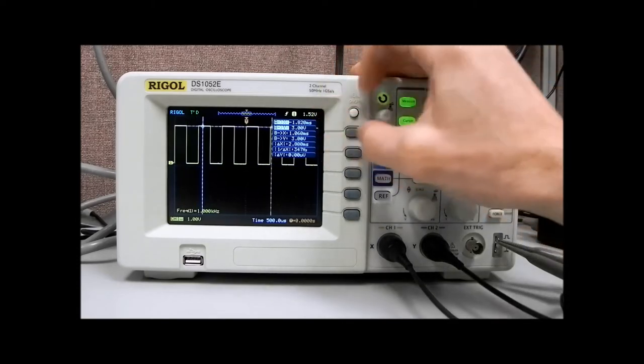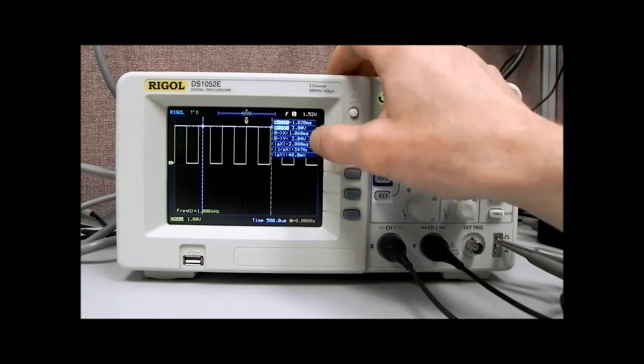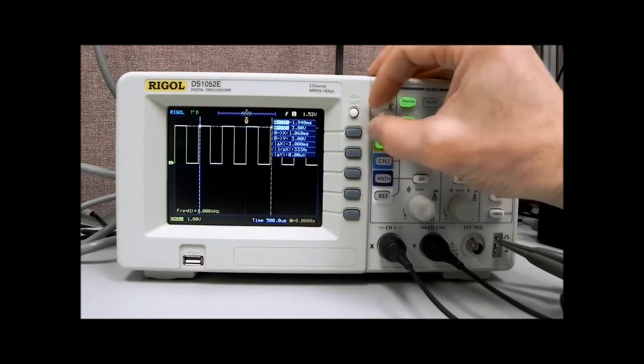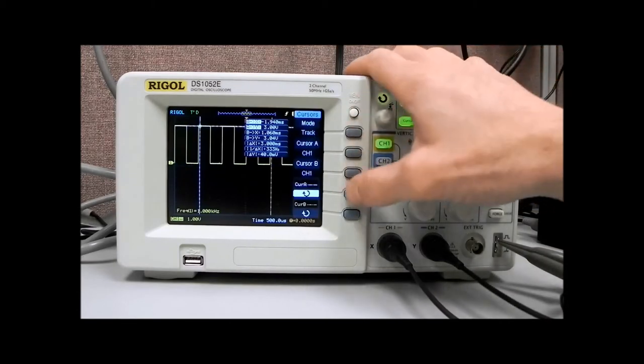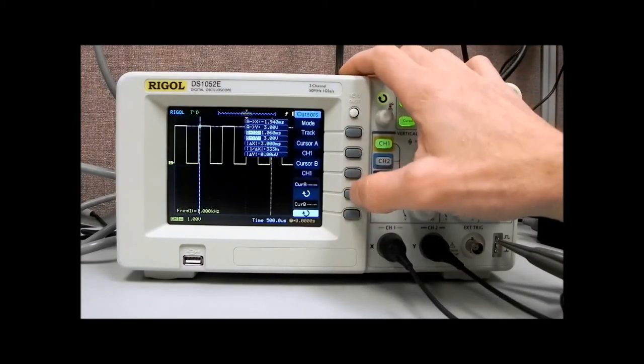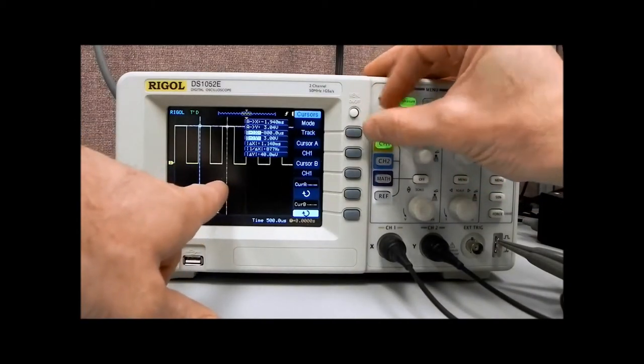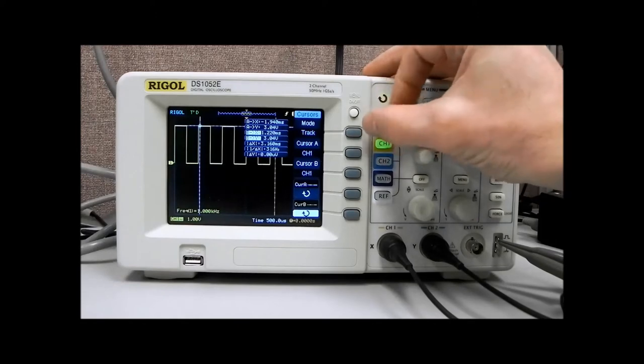And so you can also see over here, we're getting some measurement changes in delta x and delta y, corresponding to the position of that particular cursor. We can go back and highlight B, and that's going to allow us to move the second cursor, and we'll get that delta between those, in both x and y.